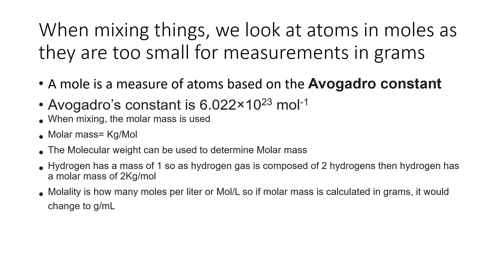If we take hydrogen — it has a mass of one. Hydrogen gas is H₂, so it has two hydrogens, giving a molar mass of 2 kilograms per mole. You also have molality, which is how many moles per liter. You can convert by changing liters to milliliters — bringing it down to 1 gram per milliliter.